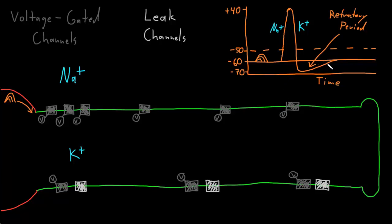The second part is called the relative refractory period. During this time, the voltage-gated sodium channels have become functional again and can respond to depolarization. However, the membrane potential is still hyperpolarized — not yet back to the resting potential. Therefore, it would take more excitatory input than normal to trigger an action potential during the relative refractory period.